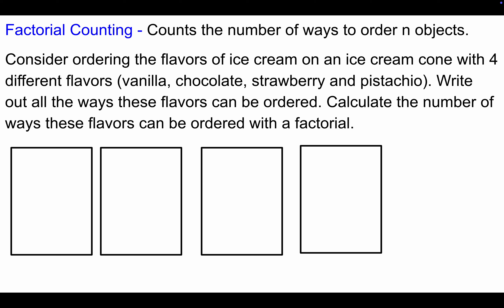Now consider ordering four different flavors on an ice cream cone: vanilla, chocolate, strawberry, and pistachio. Let's calculate the number of ways these flavors can be ordered using a factorial, and also list them out. Starting with vanilla: vanilla-chocolate-strawberry-pistachio, then vanilla-chocolate-pistachio-strawberry. Then with strawberry second: vanilla-strawberry-chocolate-pistachio and vanilla-strawberry-pistachio-chocolate. Then with pistachio second: vanilla-pistachio-chocolate-strawberry and vanilla-pistachio-strawberry-chocolate.